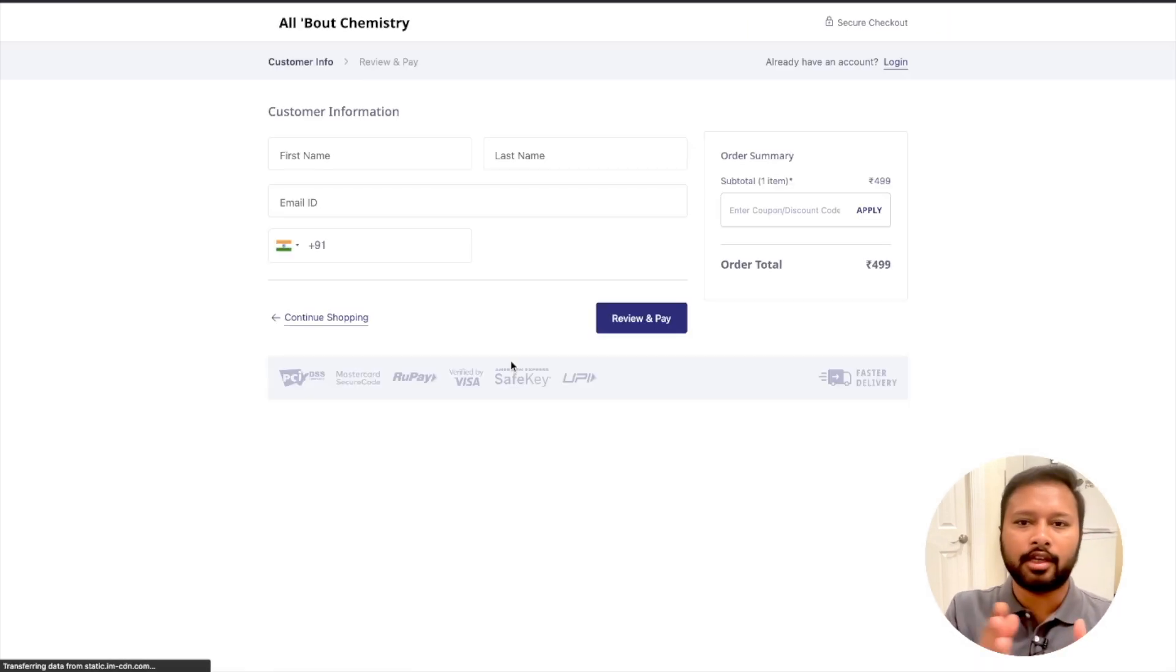Once you click on this, you will have to check out using your details. Give your first name, last name, email address, phone number, and then you can pay using all these payment methods like UPI, debit card, credit card, or whatever payment methods are there.